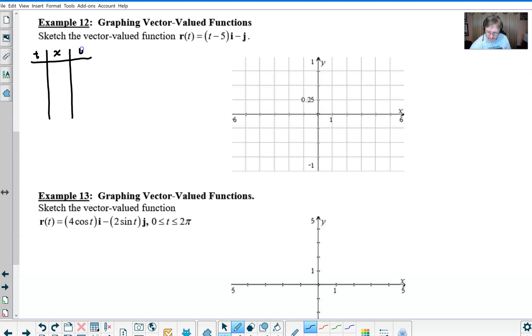We go ahead and start randomly picking some values that could generate some results. Let's say that we pick t = 0, seems like a good place to start. The x component here is going to be computed by taking t - 5, or 0 - 5 in this case which is -5, but then the y component or j component (they're the same thing) is a constant of -1.